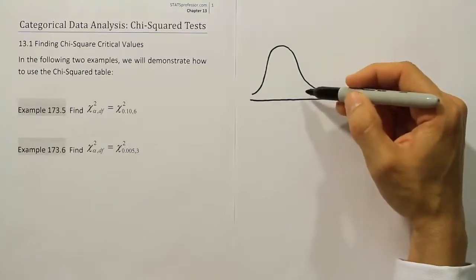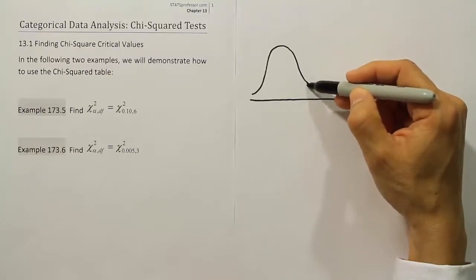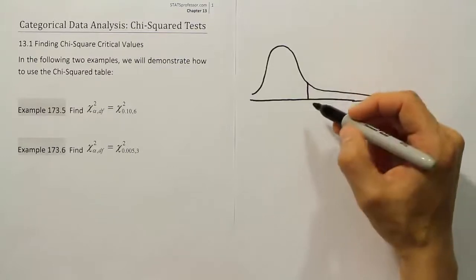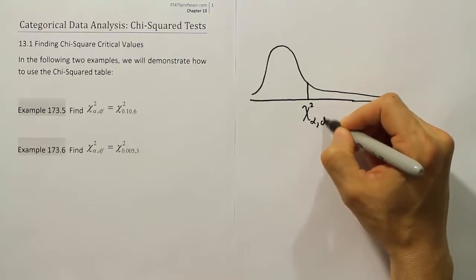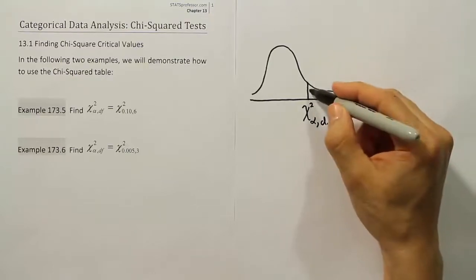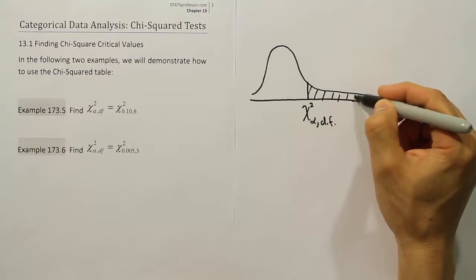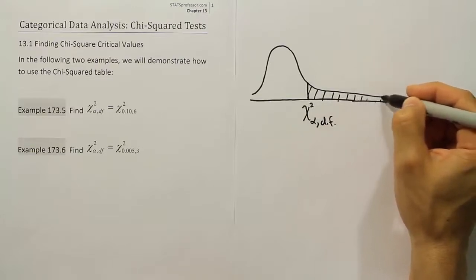The way the curve is set up when we're looking for a critical value is it's going to be a right-tailed test. And we're going to have this chi-squared critical value here at the bottom separating the shaded area here from the rest of the curve.